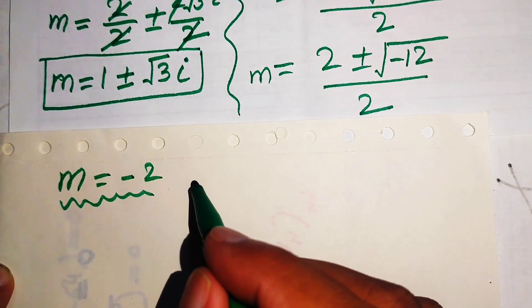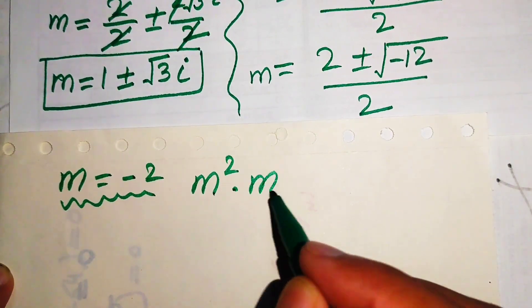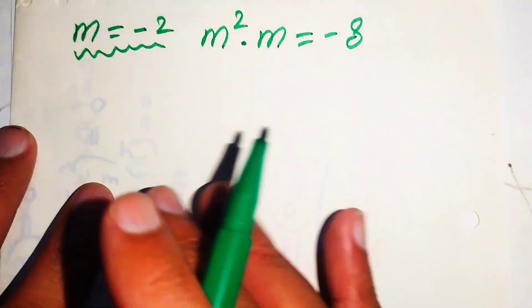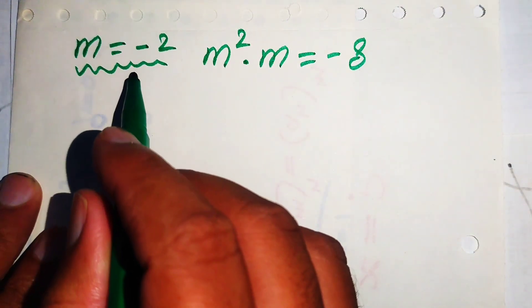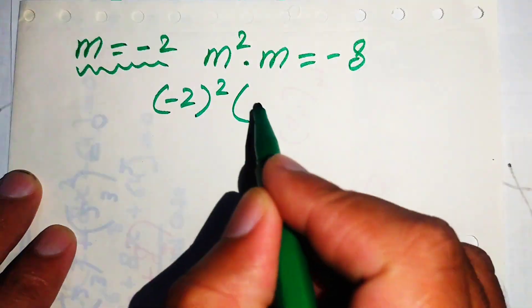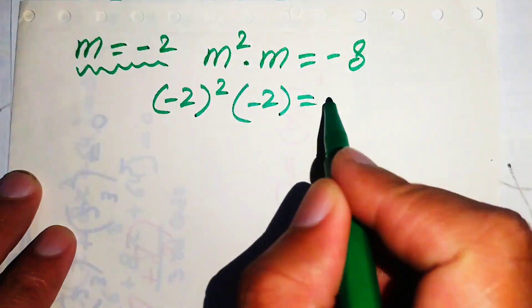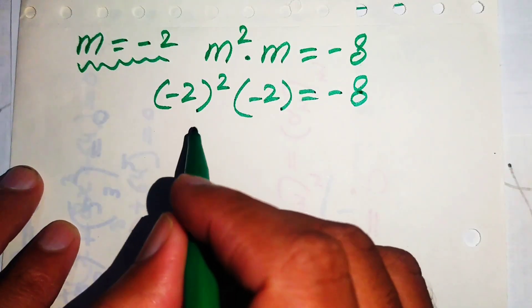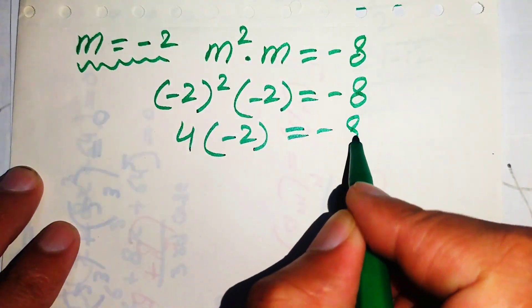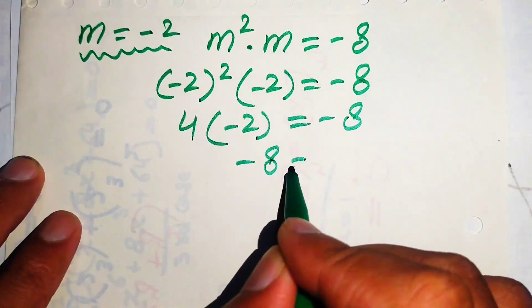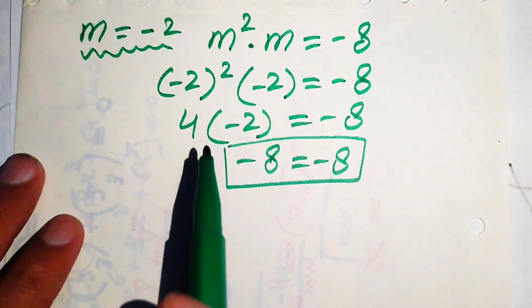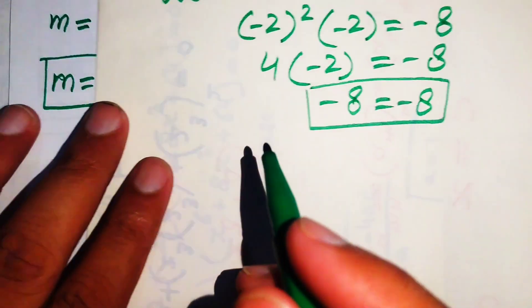We copy down the original equation: m squared times m equals minus 8. First we verify our first solution m equals minus 2. Substituting: (minus 2) squared times (minus 2) equals minus 8. That gives 4 times minus 2 equals minus 8, so minus 8 equals minus 8. This shows that m equals minus 2 satisfies the given equation.